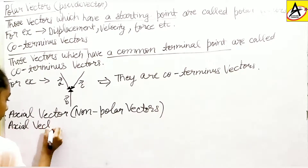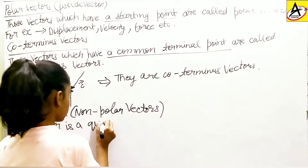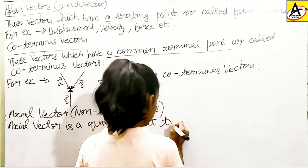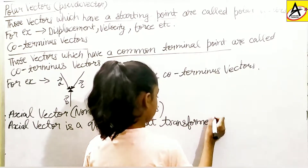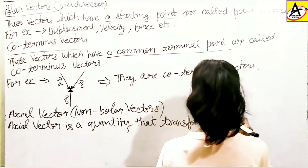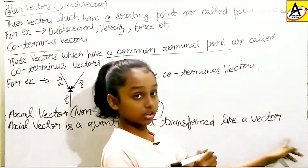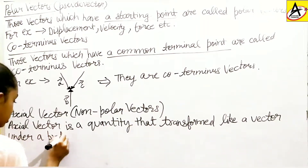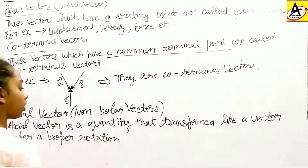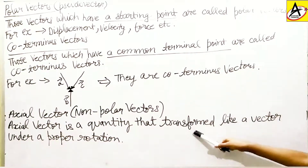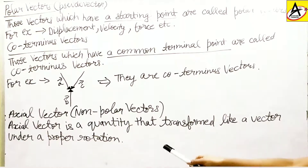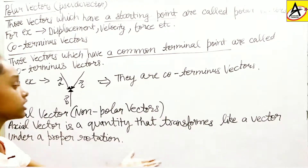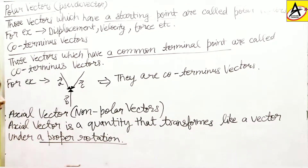Axial vector is a quantity that transforms like a vector under a proper rotation. It is talking about rotation — the axial vector is a vector which represents rotational effects and acts along the axis of rotation, in accordance with the right-hand screw rule.